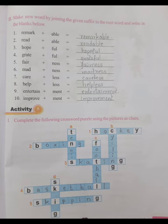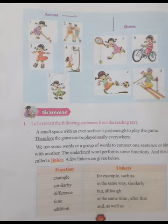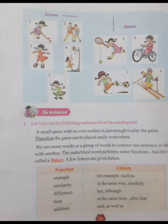Grammar: Let's revisit the following sentence from the reading text: 'A small space with an even surface is just enough to play the game. Therefore the game can be played easily everywhere.' We use some words or a group of words to connect one sentence or idea with another. The underlined word performs this function and is called a linker.